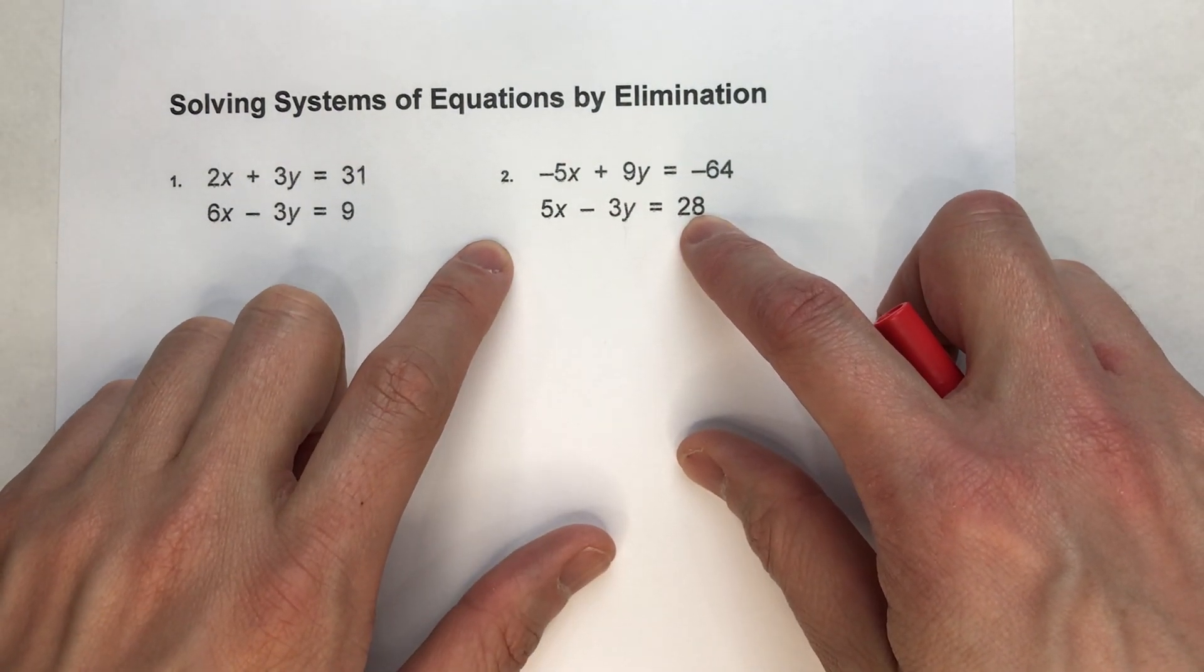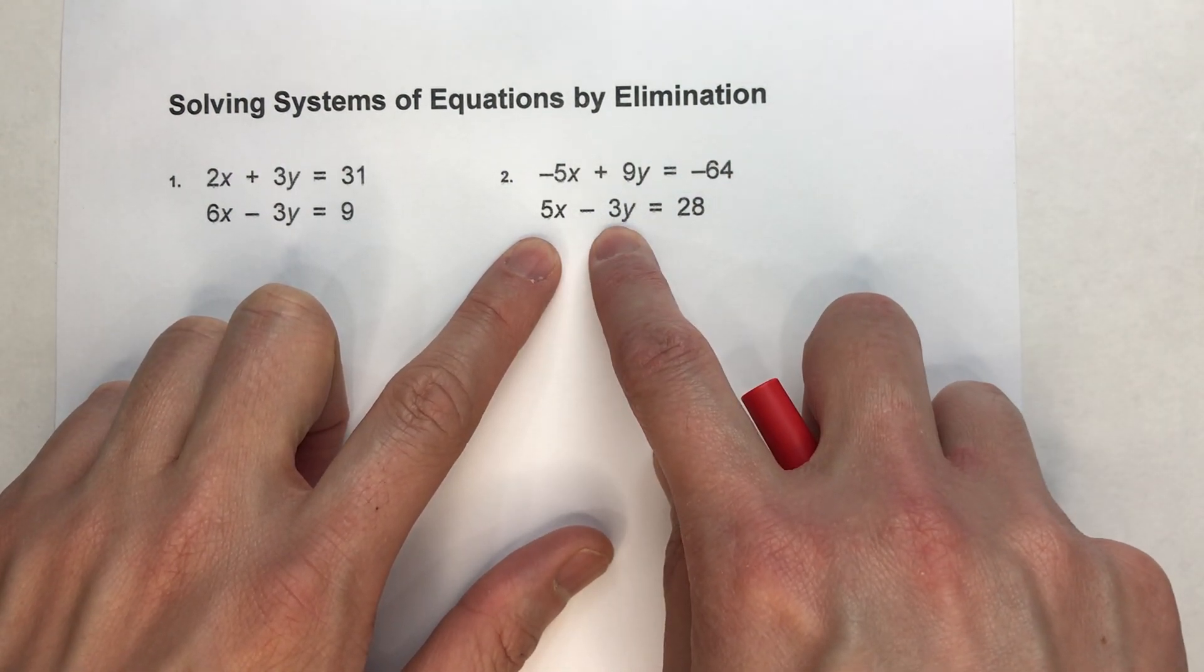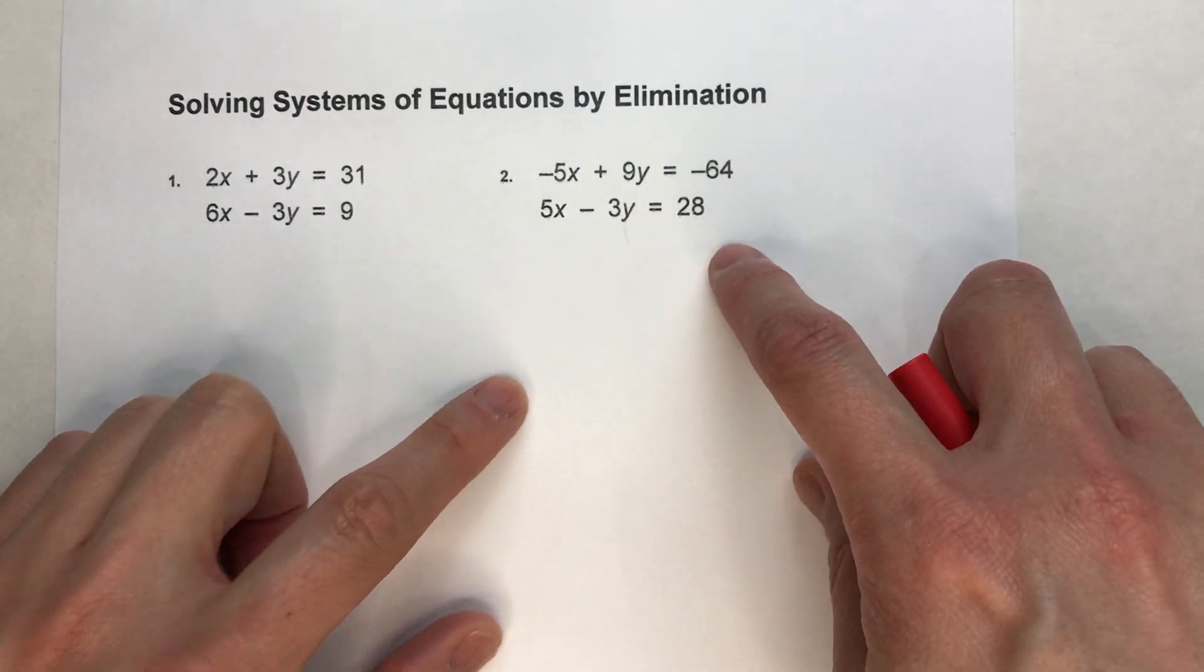Same with the second system of equations: negative 5x plus 9y equals negative 64, 5x minus 3y equals 28. Again, the x's and y's are on one side, the number's on the other side.